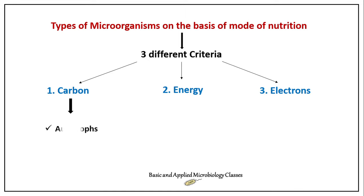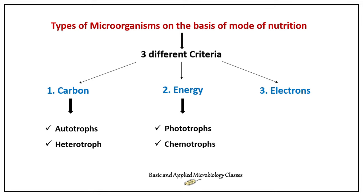On the basis of carbon, we can classify microorganisms into two types: first are autotrophs, and second are heterotrophs. Autotrophs have different carbon compound preferences, while heterotrophs require another type of carbon source. When talking about energy sources, microorganisms can be classified into two types: phototrophs and chemotrophs.